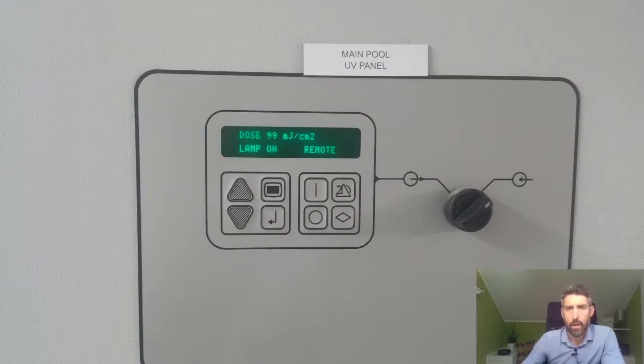There will usually be a control panel to tell you what the dose rate is, the intensity, flow rate, and also how many hours the UV lamp has been operating for, how many hours it's got left, and whether or not there's a fault with any of the UV lamps.